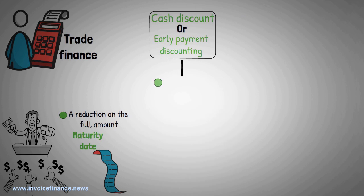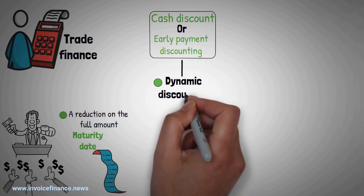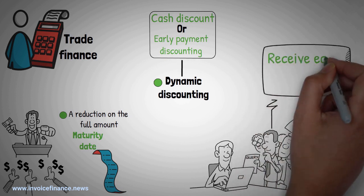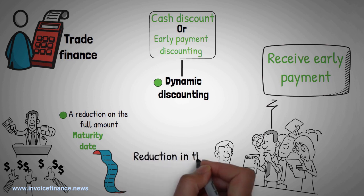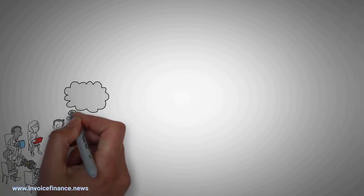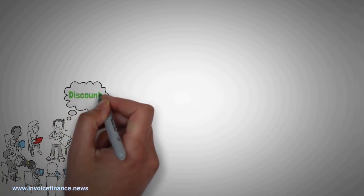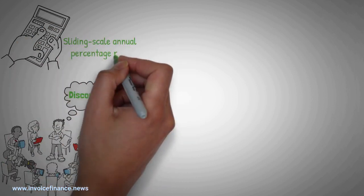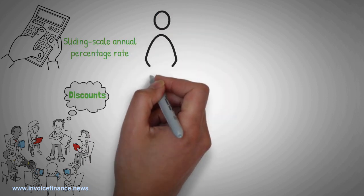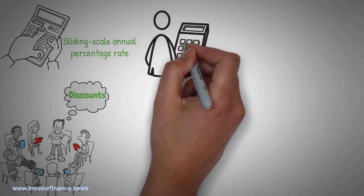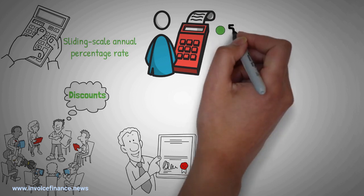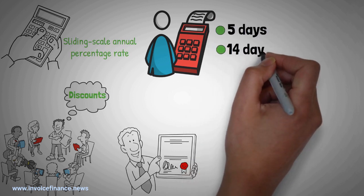There are two methods for early payment discounting. The first is dynamic discounting. This is a system where the buyer gives the supplier the choice of whether to receive early payment on their invoices in return for a reduction in the invoice amount. With dynamic discounting, the supplier has the power to decide which specific invoices it wishes to offer discounts for in return for early payment. The discount rate is calculated using a sliding scale annual percentage rate (APR). In other words, the size of the discount is determined by how quickly payment is made. Thus, the invoice amount due is smaller for a payment made after five days than for a payment made after 14 days.